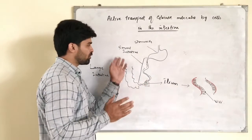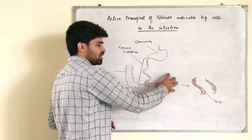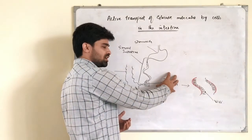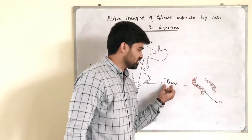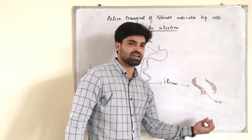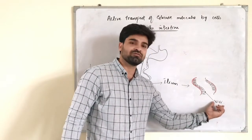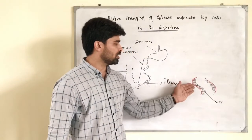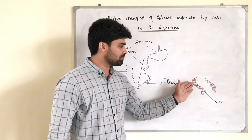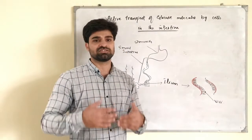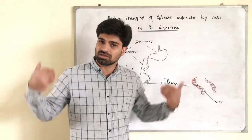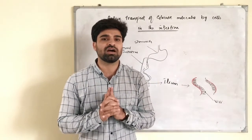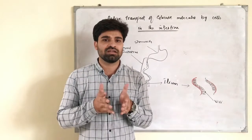The ileum is the last part of the small intestine, where almost all types of digestive nutrients are reabsorbed. The ileum has small finger-like projections called villi, and these cells actively transport glucose from the intestine to the blood, which then transports the glucose to other parts of the body.